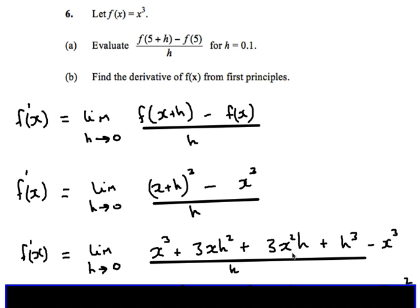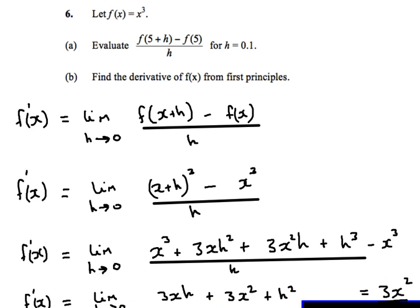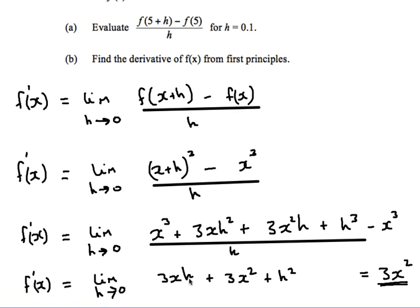You can see that the x cubed and the x cubed are going to cancel out. So we end up with 3x squared h plus 3xh squared plus h cubed, all over h — basically something like 3xh plus 3x squared plus h squared. When h approaches 0, the terms with h will be 0, and we're left with 3x squared, which is the differential of x cubed. That is the method of first principles differentiation using limits.